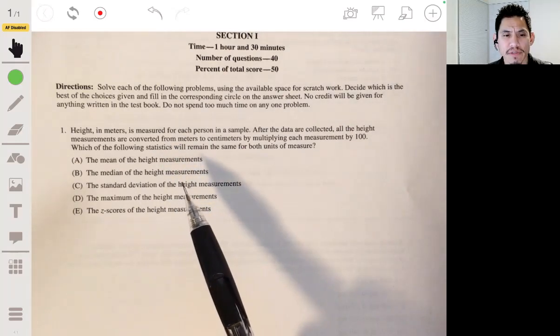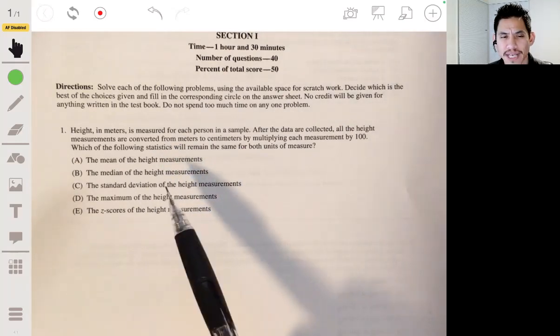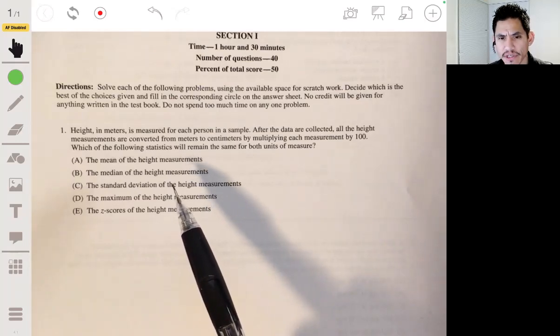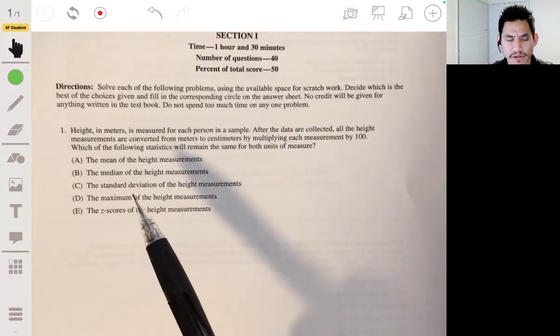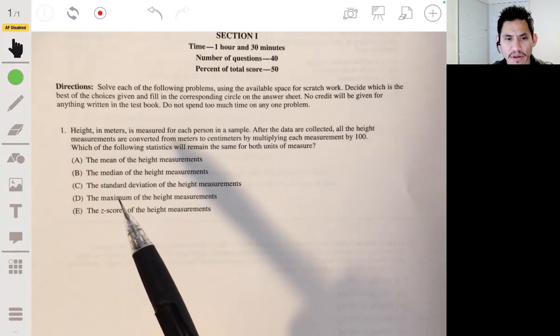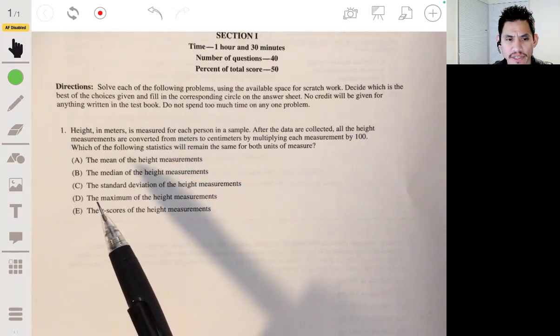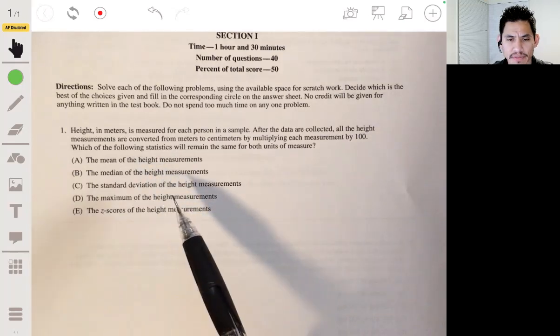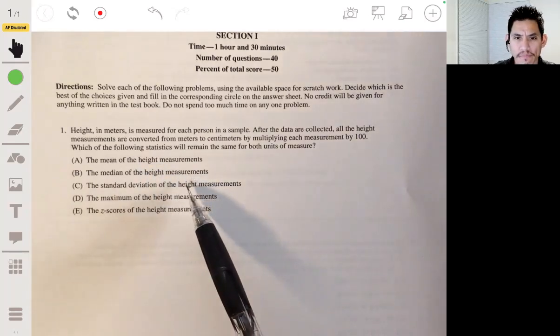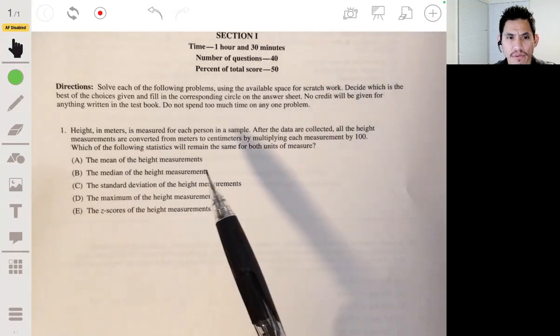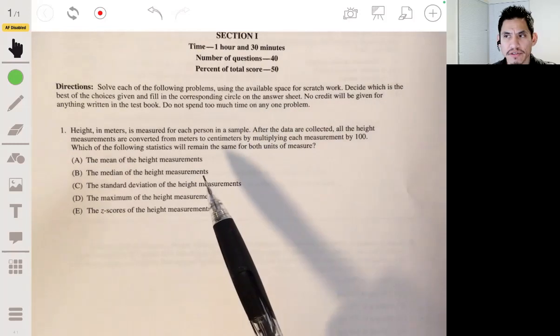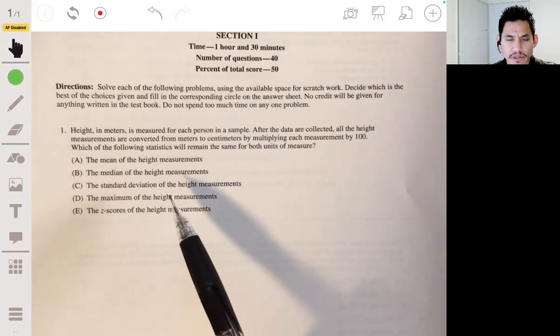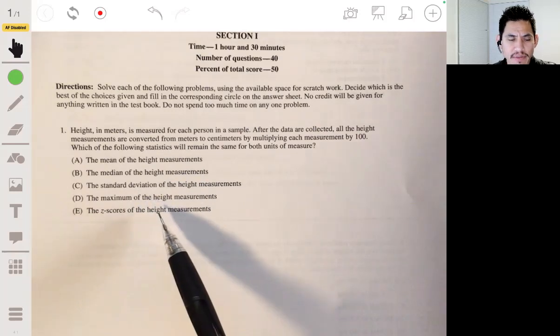The standard deviation of the height measurement, this is a tricky one, this will technically still change. It will still again be multiplied by that value, but let's go through the other one so I can explain a little more on that. The maximum of the height measurement, that's also going to change because if the max is, you know, two meters, then it'll change to 200 centimeters.